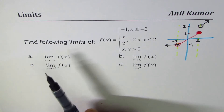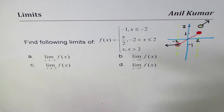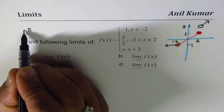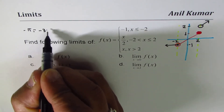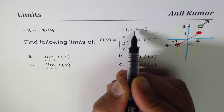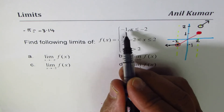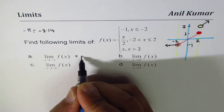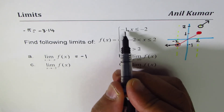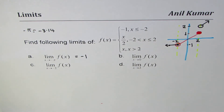The first limit is as x approaches -π. Since -π ≈ -3.14, which is less than -2, we are in the interval covered by the first piece, f(x) = -1. Therefore, this limit is -1.